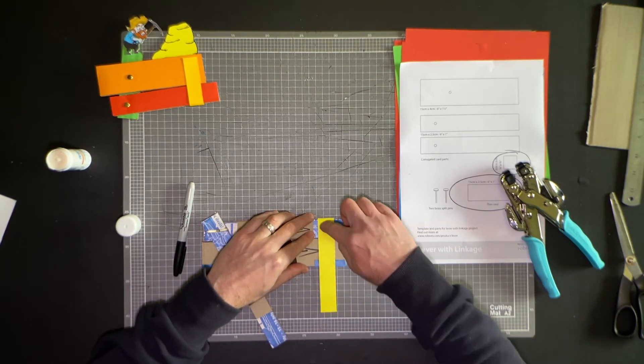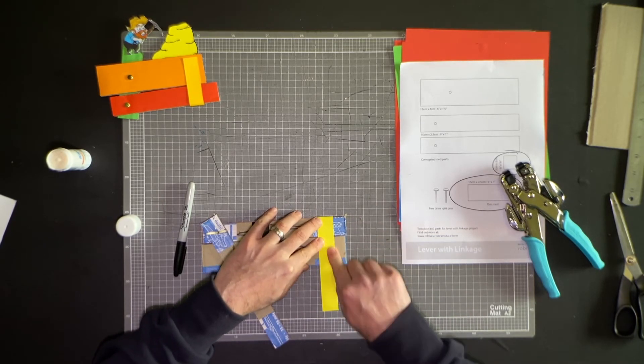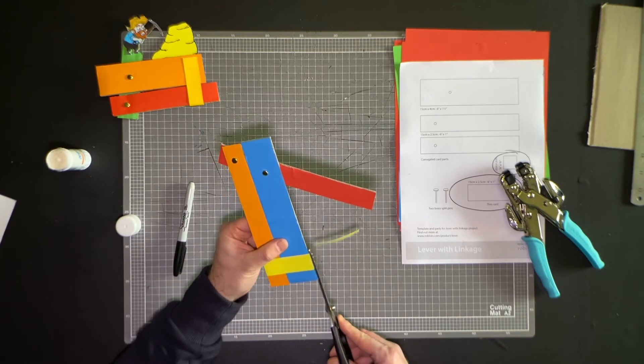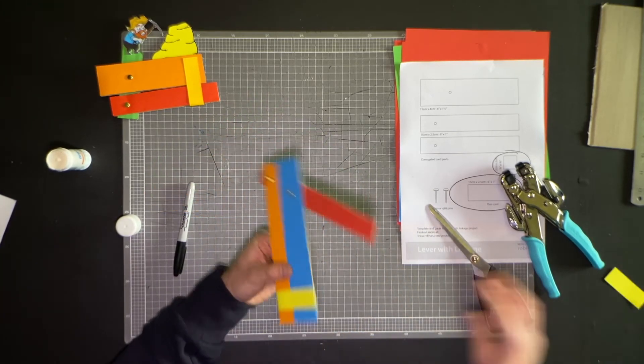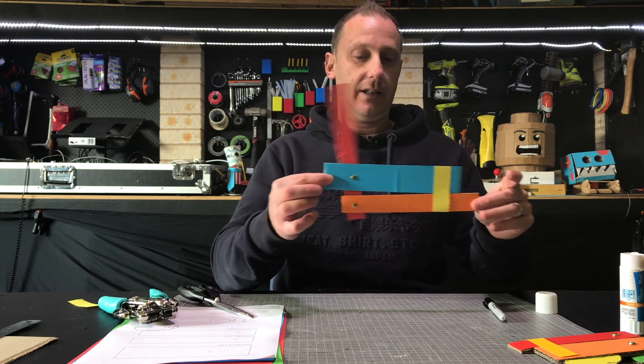You do need to give it just a little bit of flex there. Don't pull it too tight. Otherwise, it might be a bit hard to move your lever. And then you can just cut that piece off like that. And then you should have a lever that pushes and pulls like so.